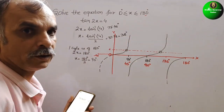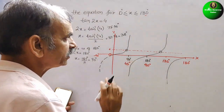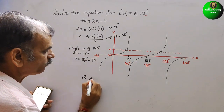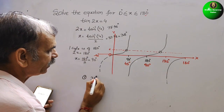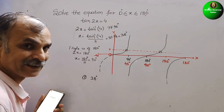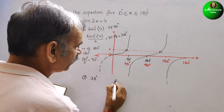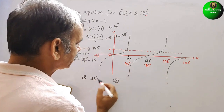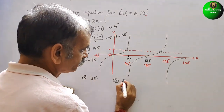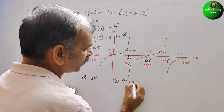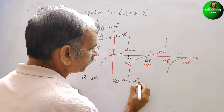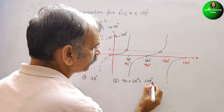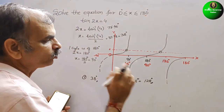So the first solution is at 38°. For the second solution: 90° + 38° = 128°. So these are your two solutions: x = 38° and x = 128°.